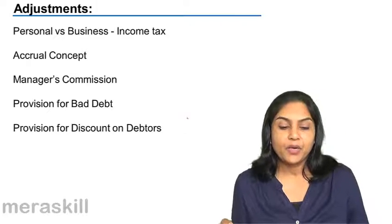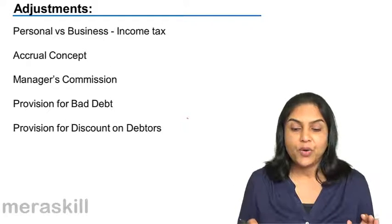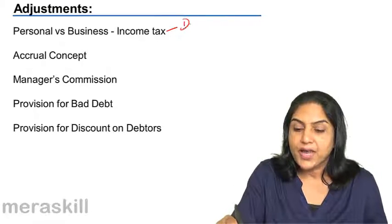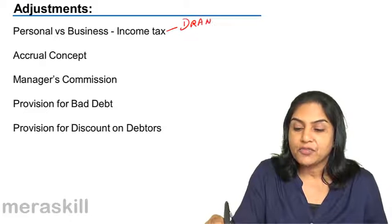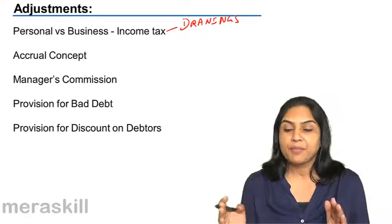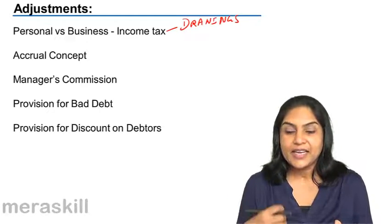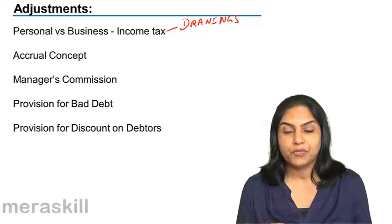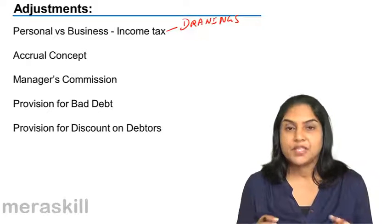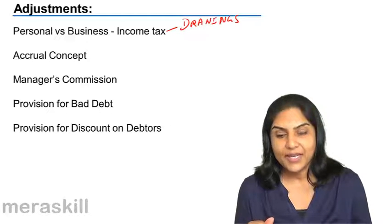A quick recap. What are the adjustments that we discussed? The first adjustment was with respect to income tax. Income tax is shown as drawings in the case of a sole proprietorship, because income tax authorities do not segregate the income of the proprietor and the income of the business. The proprietor is charged income tax on all of his income.